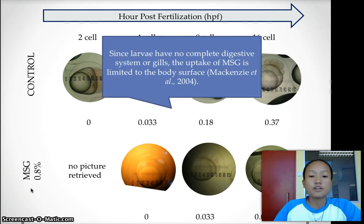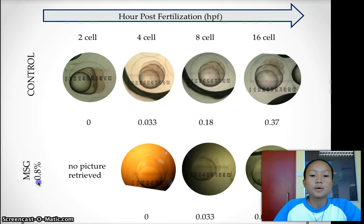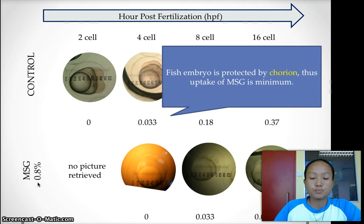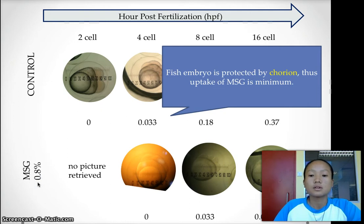Since the larvae have no complete digestive system or gills, the uptake of MSG is limited to the body surface. As we know, the fish embryo is protected by the chorion, so the uptake of MSG is minimum. Therefore, the effect of MSG is not as pronounced as we can see later.